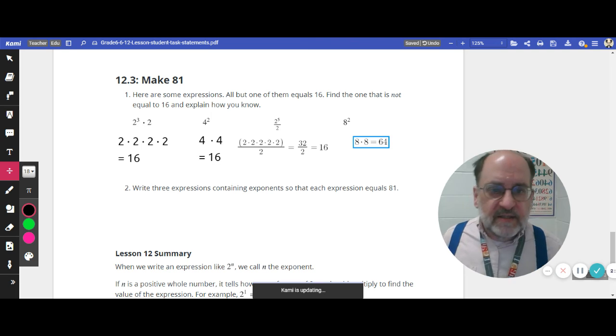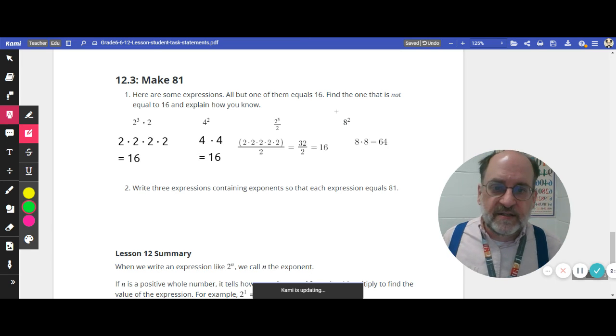When I see 8 squared, what I mean is 8 times 8. 8 times 8 is 64. So I definitely want to use the fact that this exponent means it's 2 things. That exponent means that I've got 2 copies of 8 times each other. So, which one is not equal to 16? We figured it out. And it's that one.